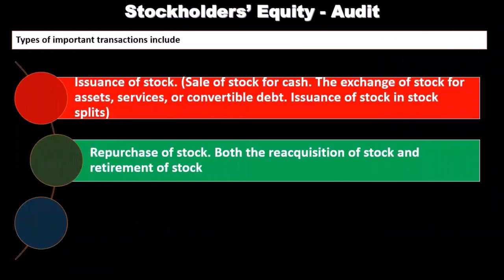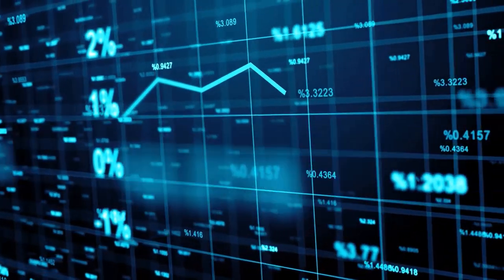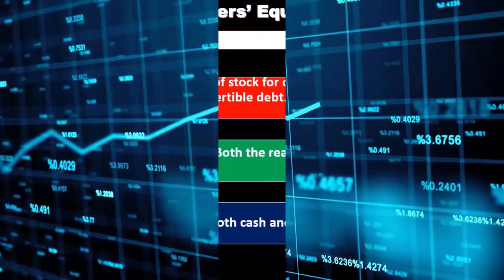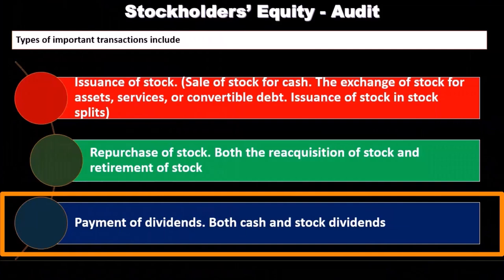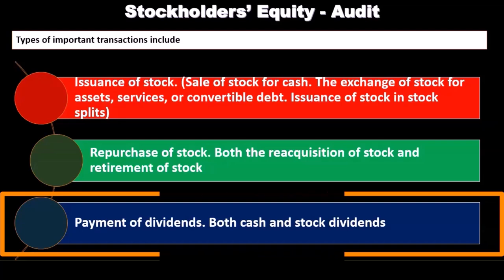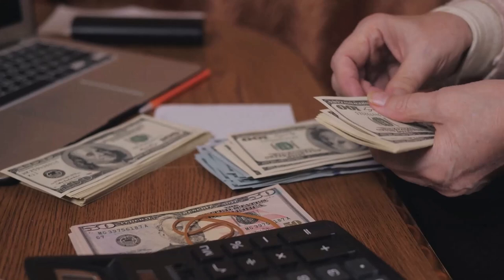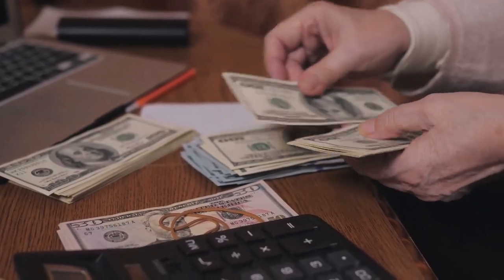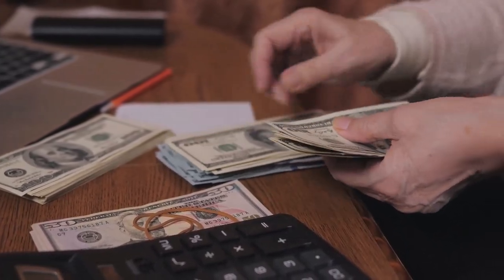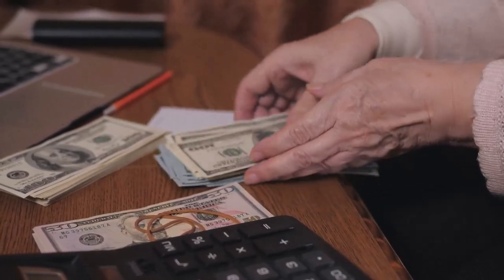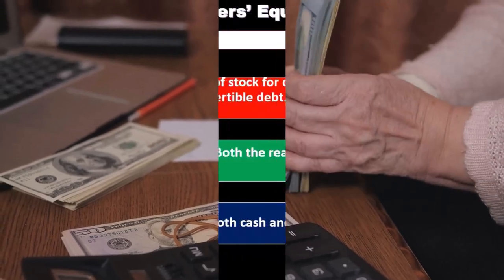If they're going to basically retire the stock, those are transactions we want to be aware of within the audit process, along with the payment of dividends — both cash and stock dividends. Dividends are something we want to consider in relation to stockholders equity. The dividend payment is similar to a draw for a sole proprietor — a return of earnings. Cash dividends are a more straightforward thing to audit.